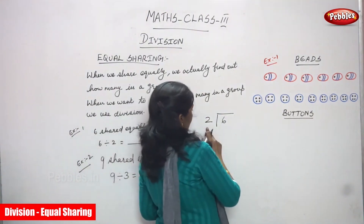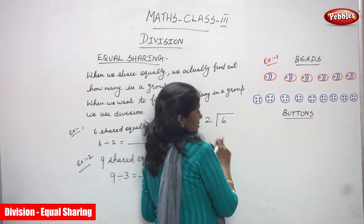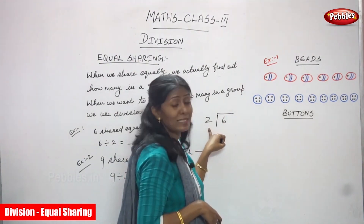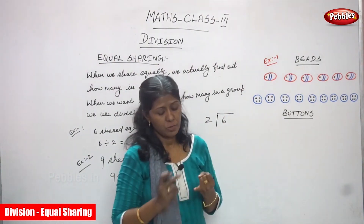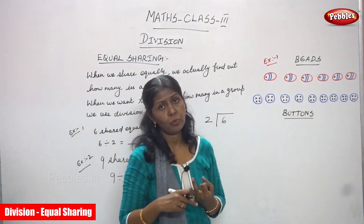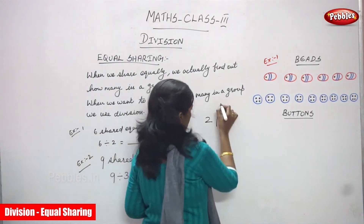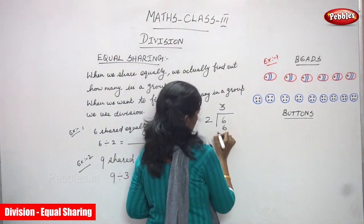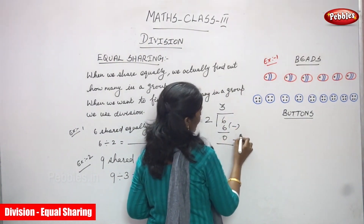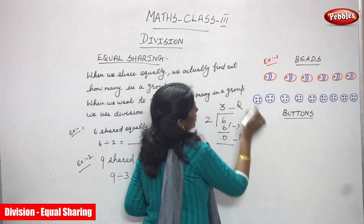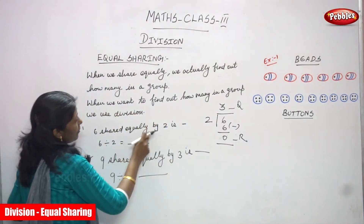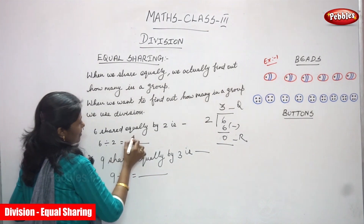This is how many we consider: 6 is the dividend and 2 is the divisor, and you will find out the quotient. 2 times 1 is 2, 2 times 2 is 4, 2 times 3 is 6. Then 6 minus 6 gives you 0 — this is the remainder and this is the quotient. So 6 shared equally by 2 is 3.